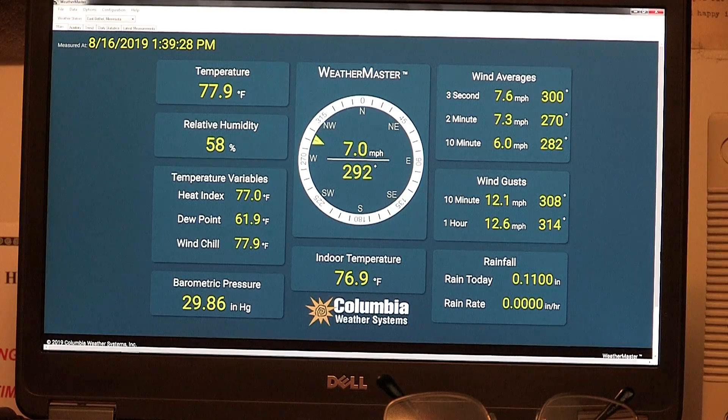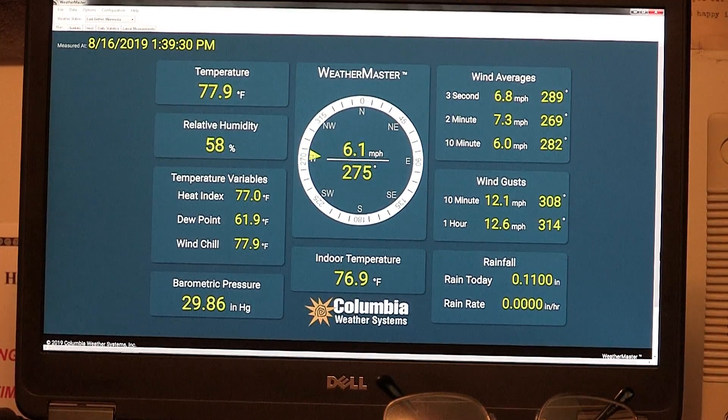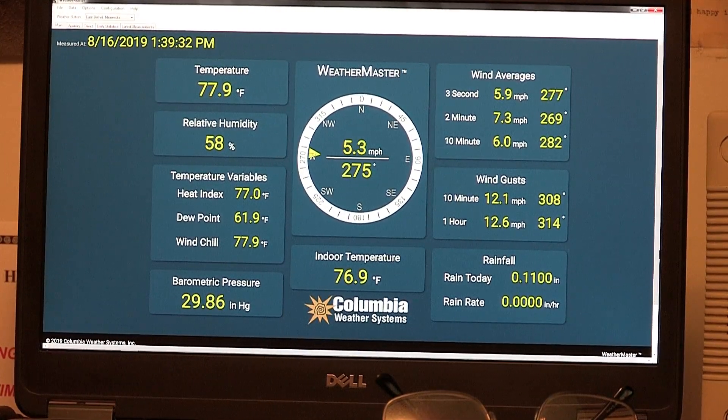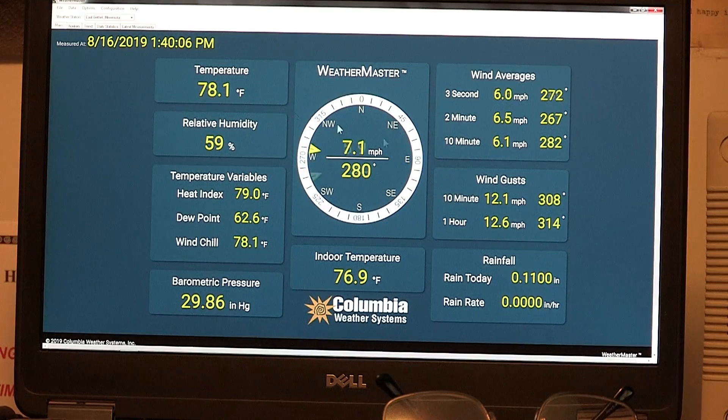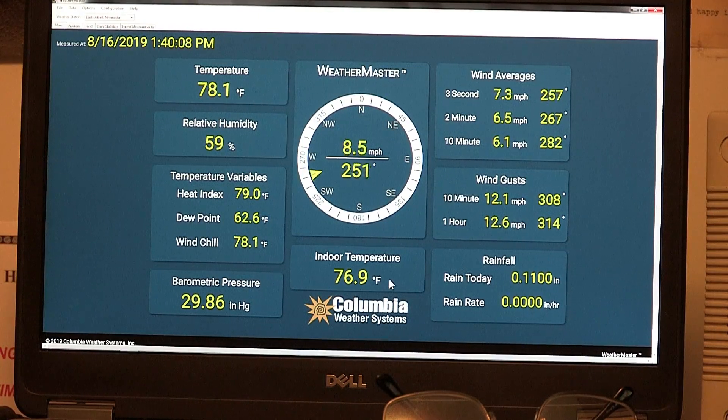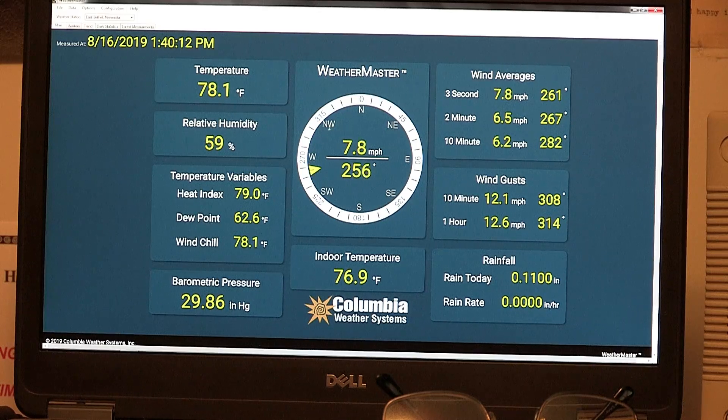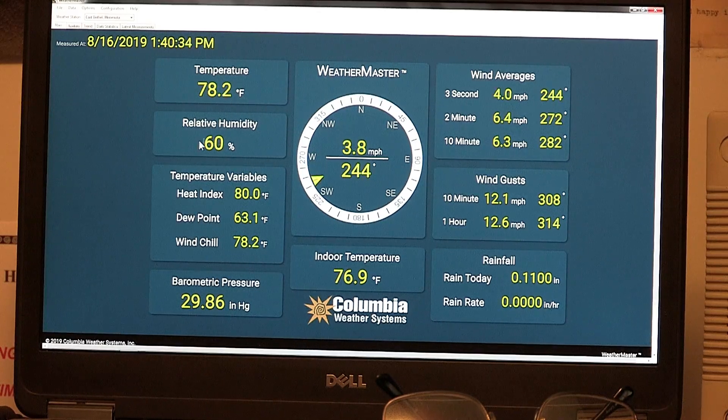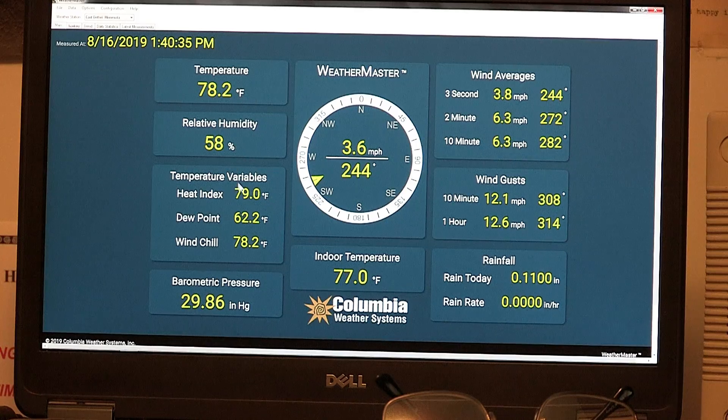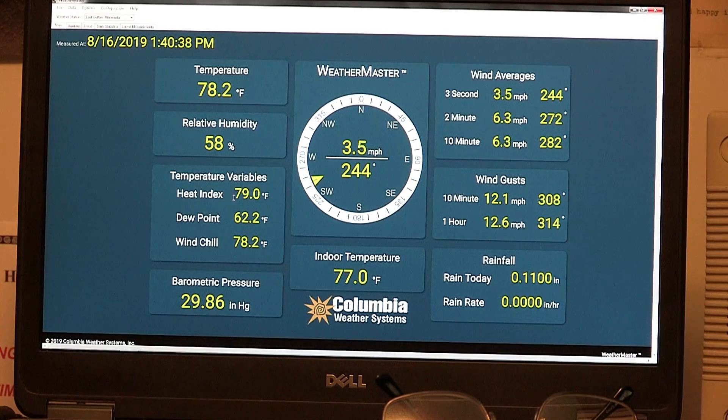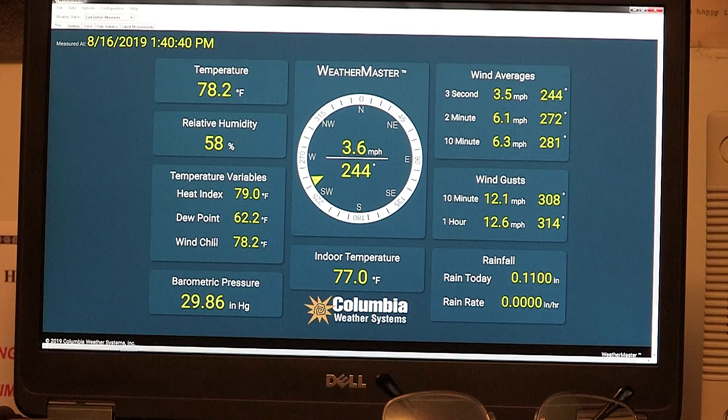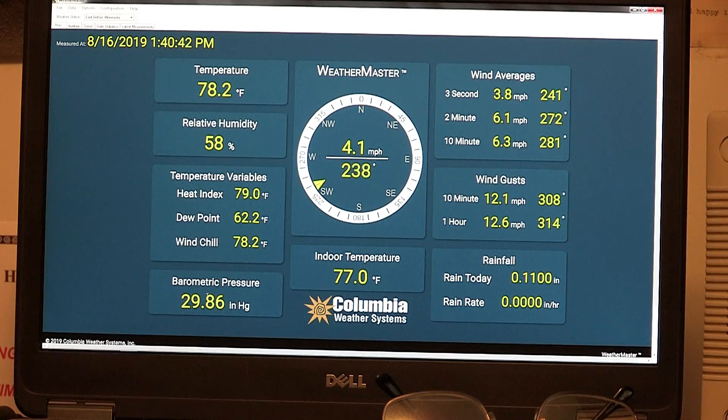And now I'll go over all the features of the new weather station here. We have temperature and indoor temperature. We got wind speed and wind direction. We have relative humidity. We have the dew point. It calculates the heat index. The wind chill. We have barometric pressure.